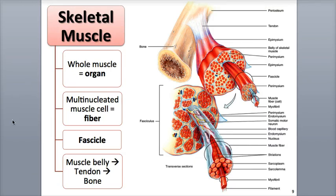The skeletal muscle fibers are the stars of the show, allowing muscles to perform their various functions. Muscle fibers are the microscopic muscle cells, having a diameter between 10 and 100 micrometers, and an average length of about 10 centimeters, which is 4 inches or so, but some can be as long as 30 centimeters, which is about a foot.